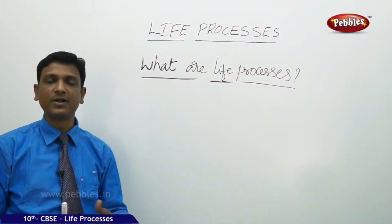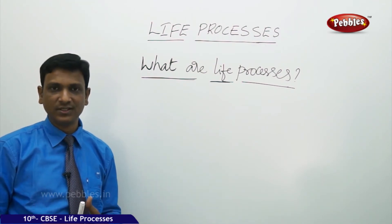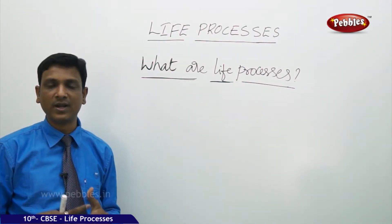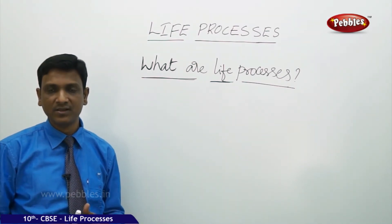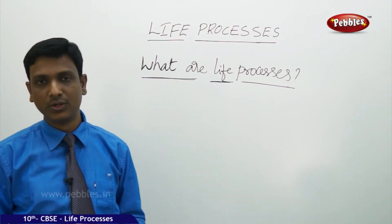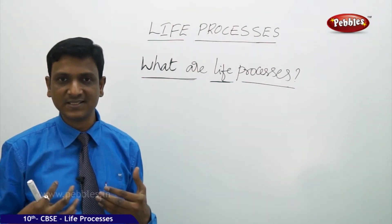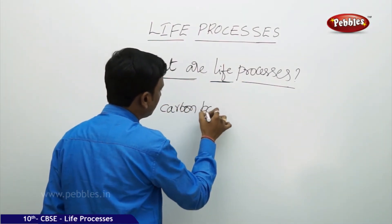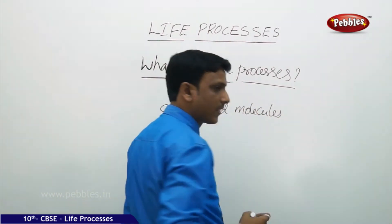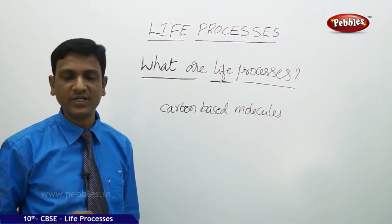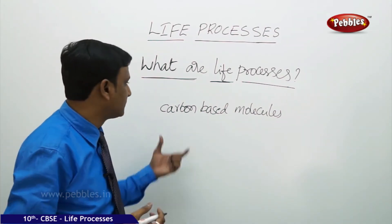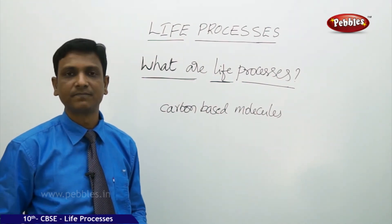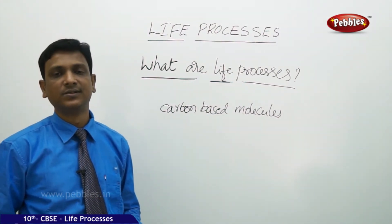Not only maintenance — growth is also required. We grow till a certain age, and during that growth period, bones, muscles, blood vessels, and nerves all need a supply of molecules to grow. Most parts of our body and cells are built up of carbon-based molecules such as hydrocarbons, fats, proteins, amino acids, and carbohydrates. We need a continuous supply of these carbon-based molecules from the environment.